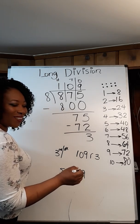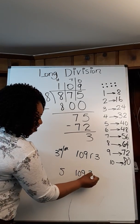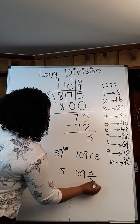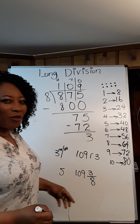You remember? You're right. Three over eight. So the way you read this is 109 and three eighths.